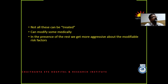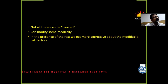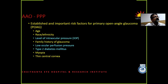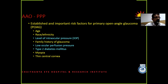When there is the presence of these untreatable risk factors, we get more aggressive about the treatable risk factors. Essentially, we can treat very evidently the intraocular pressure. If there is low perfusion pressure also, we can do some things about it. Diabetes can be controlled. The rest we cannot control, but addition of those risk factors would make us more aggressive on the treatable risk factors.